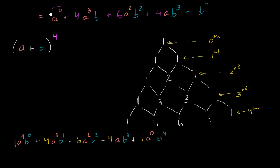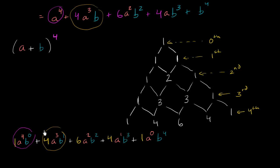This term, a to the fourth — that's 1 times a to the fourth times b to the zero, which is just a to the fourth. This gave an equivalent result to the binomial theorem. Now an interesting question is: why did this work? I encourage you to pause and think about it on your own.